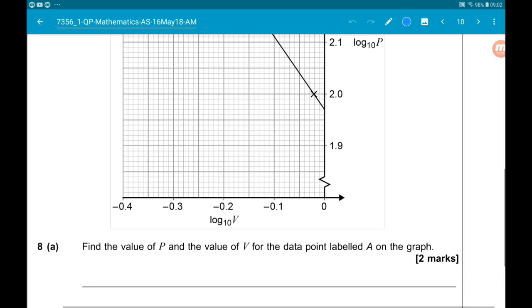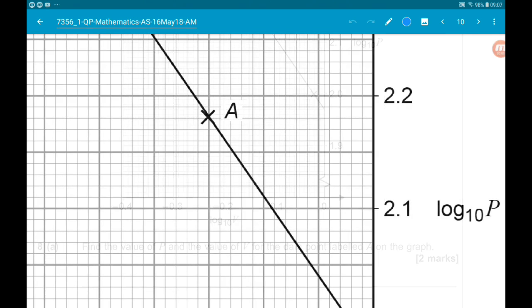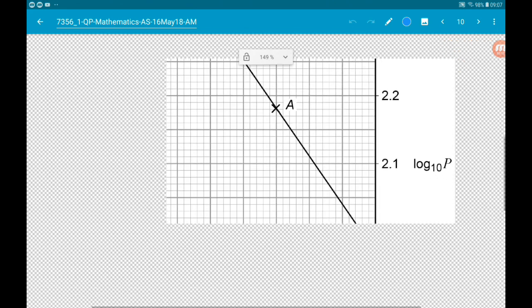Part A wants us to find the value of P and V for the result marked A. So here is our point marked A. If we go directly across to the y-axis we would get log base 10 of P is 2.18.